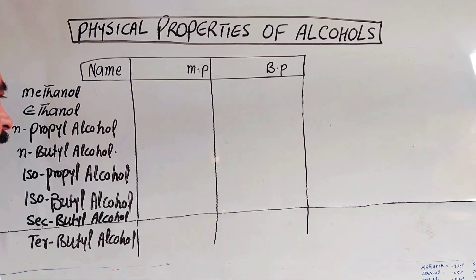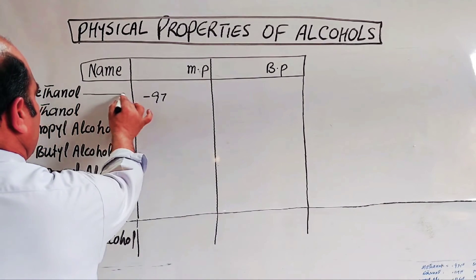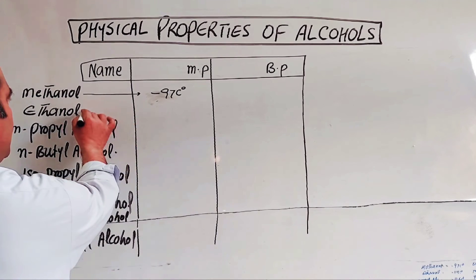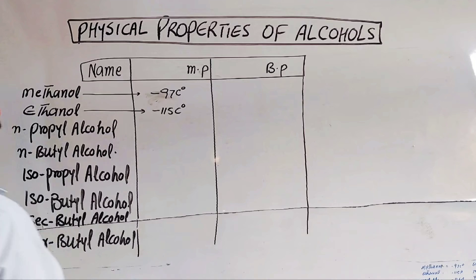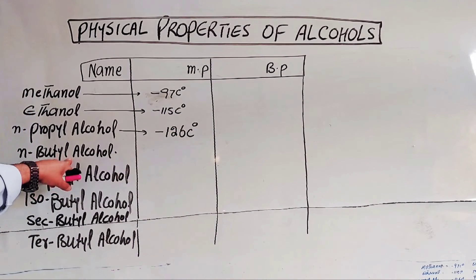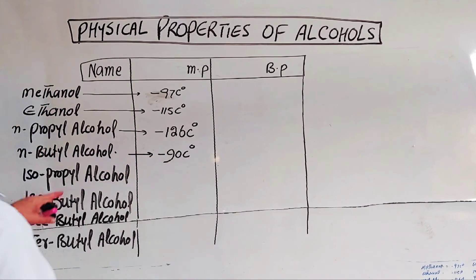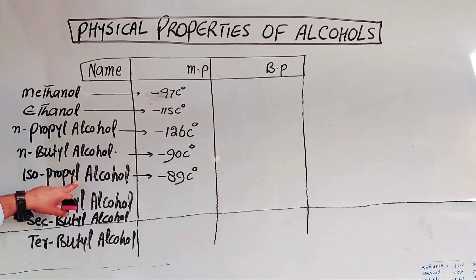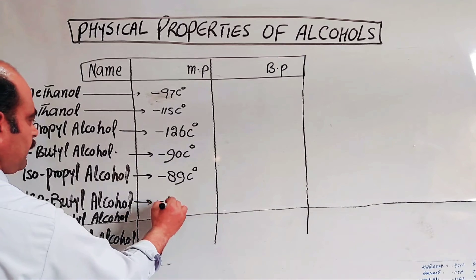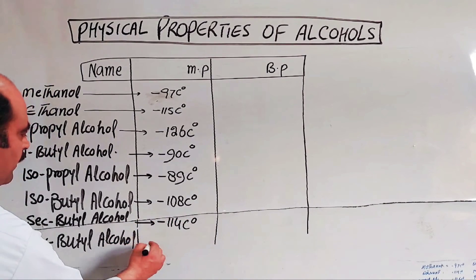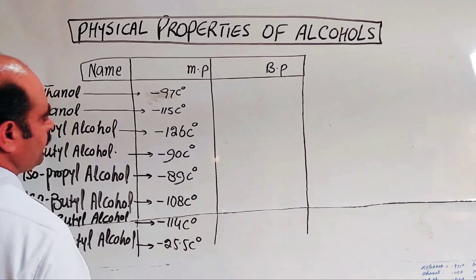The melting point values are: methanol −97°C, ethanol −115°C, normal propyl alcohol −126°C, n-butyl alcohol −90°C, normal propyl alcohol −89°C, isopropyl −108°C, isobutyl −114°C, and −25.5°C for tertiary butyl alcohol.